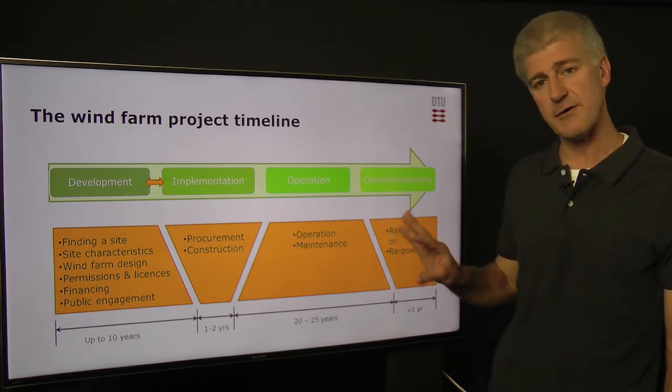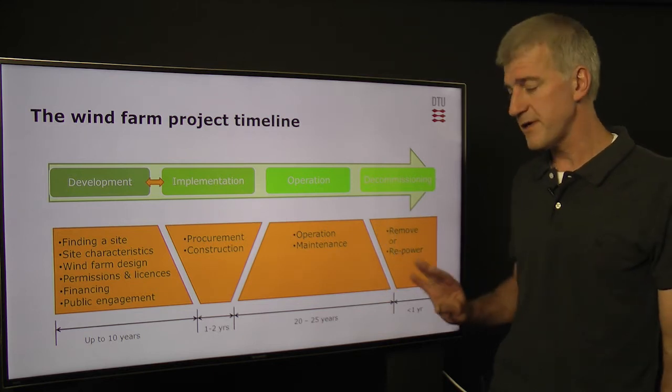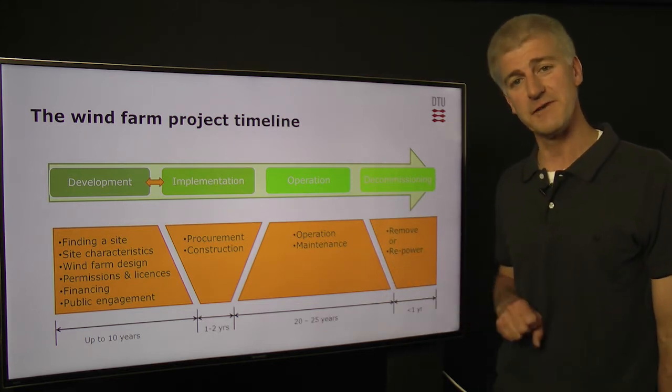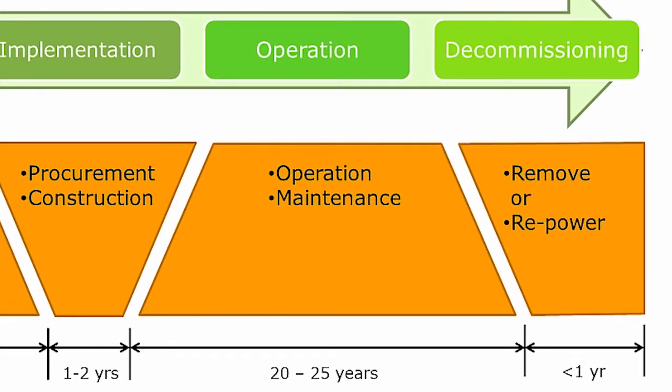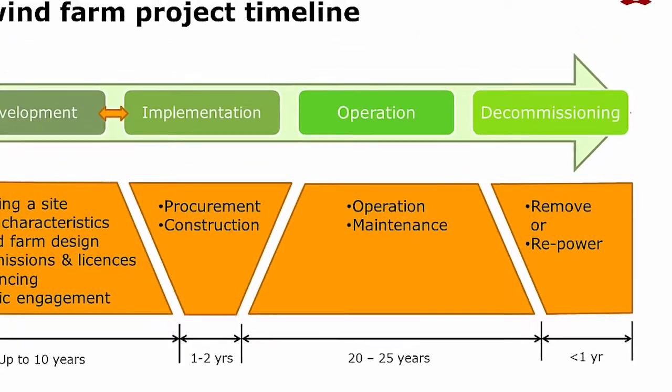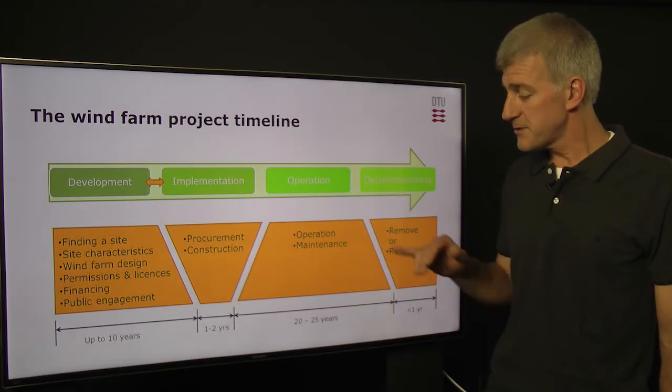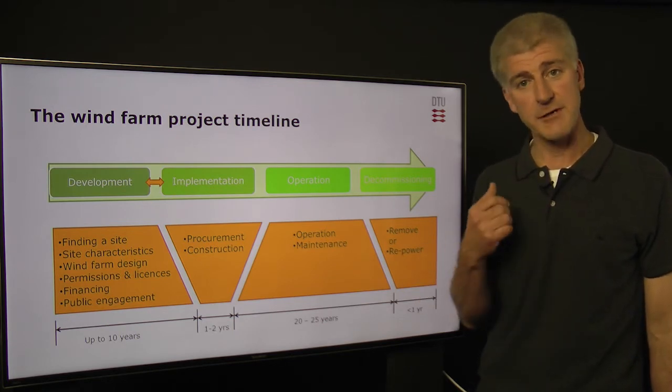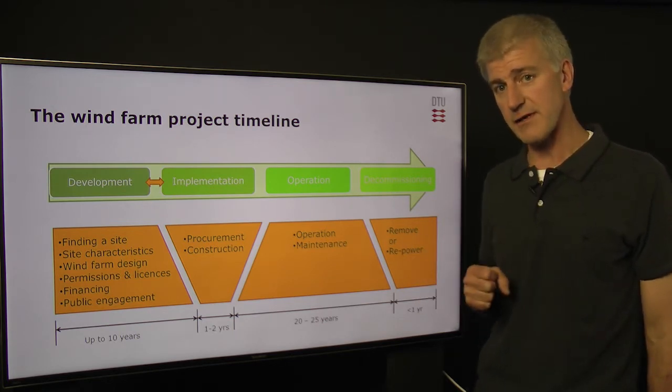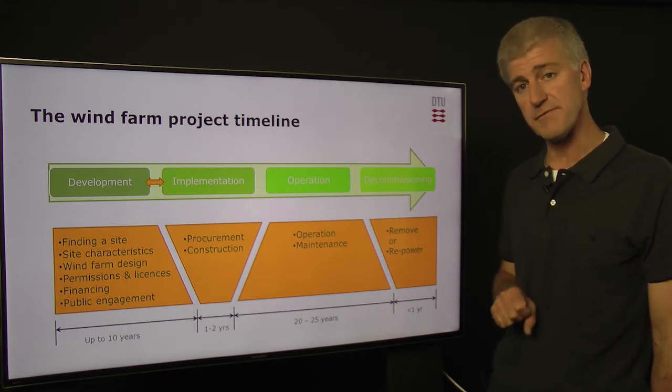The third phase then is the operational phase, and this hopefully is the longest phase of your wind farm project. These days, we're designing wind farms for between twenty and twenty-five years. The daily operation of the wind farm is that you need to make sure that it is operating as intended. And in order to be able to do that, there needs to be regular maintenance of both the wind turbines themselves and all the other ancillary equipment that there is in the wind farm too.